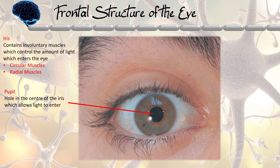The iris is the part of our eyes surrounding our pupil. It contains two sets of involuntary muscles: the circular muscle and the radial muscle. These two muscles help to control the size of our pupil, hence controlling the amount of light that enters our eyes.